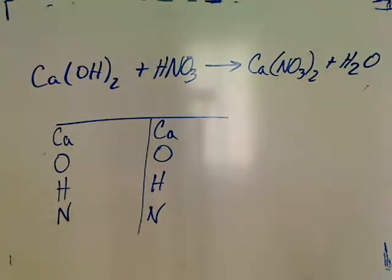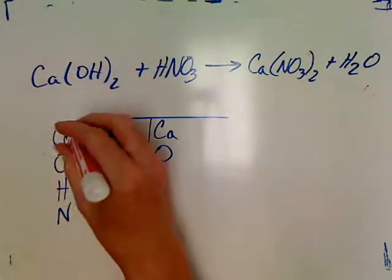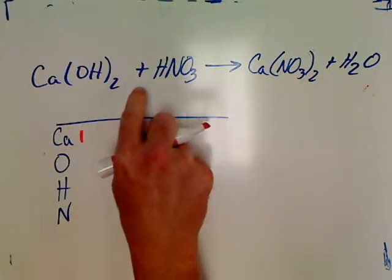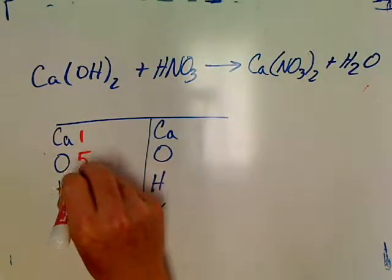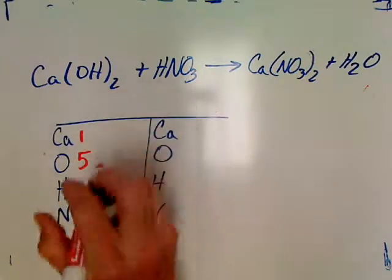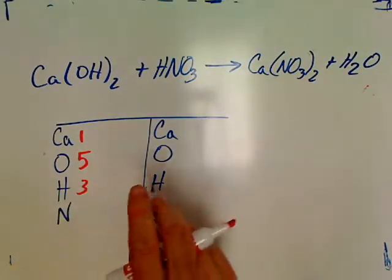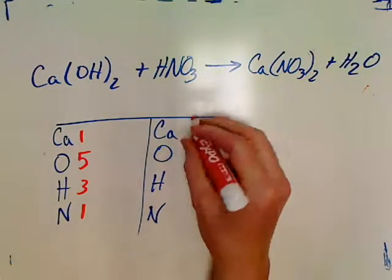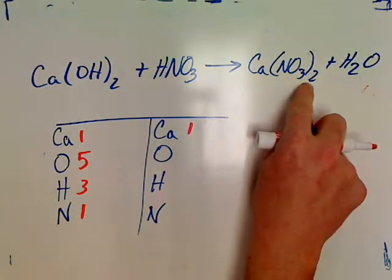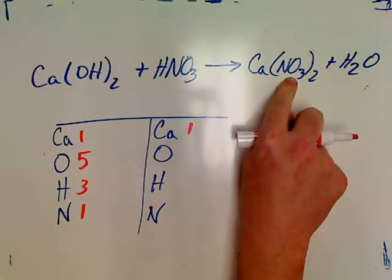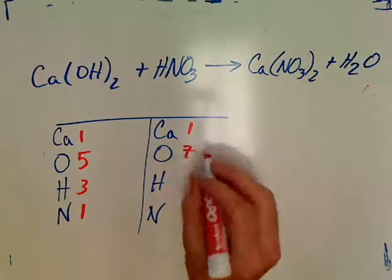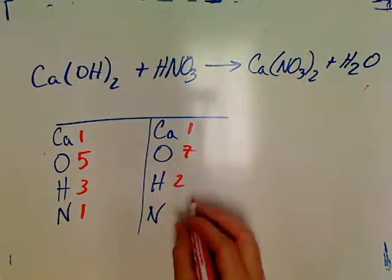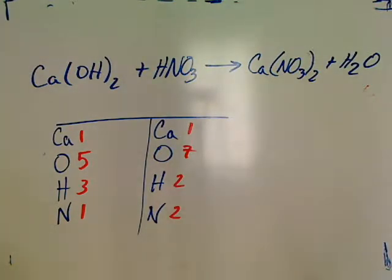So now let's go back and do our counting. I've got one Ca. O's I've got two times one is two. So two plus three is five. Two plus one. There's three on the H's. N's I've got one. I've got on the other side one Ca. O's I've got six. Two times three is six plus one is seven. H's I've got two. And N's I've got two times one. I've got two of those on that side.